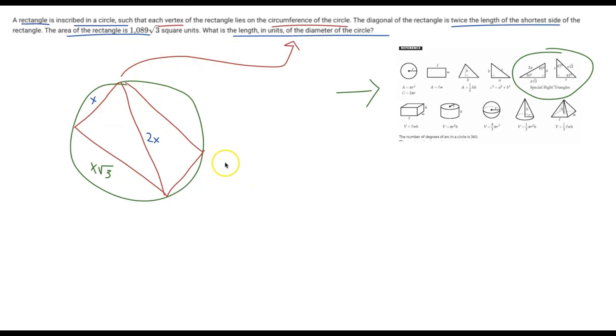And we know length times width equals the area of a rectangle. We have the width right here and the length right here, and so we just have to multiply those together. So X times X square root three is going to give us the area that they provided, 1089 multiplied by square root three square units. And all we have to do now is solve for X. So you can plug this right into Desmos, and it'll give you an answer of X equals 33.